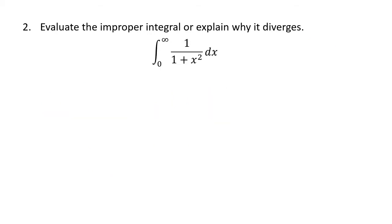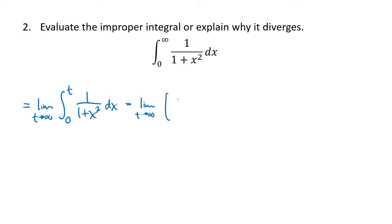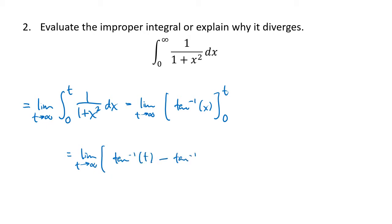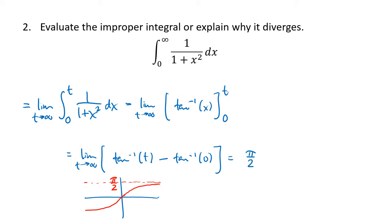Let's try this one. Again, the very first thing you should do is rewrite this as a limit: the limit as t goes to infinity of the integral from 0 to t of 1 over 1 plus x squared dx. That's our arctangent integral, so we get inverse tangent of x, evaluated at t and at 0. We get the limit as t goes to infinity of the inverse tangent of t minus the inverse tangent of 0. We need to know that the inverse tangent function has a horizontal asymptote at pi over 2, which means that as t goes to infinity, the inverse tangent of t goes to pi over 2. The inverse tangent of 0 is 0, so we get pi over 2 minus 0, which is pi over 2.